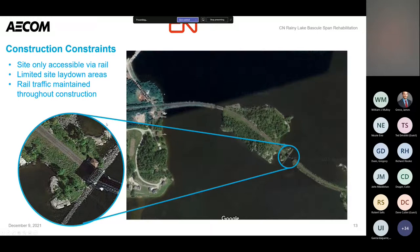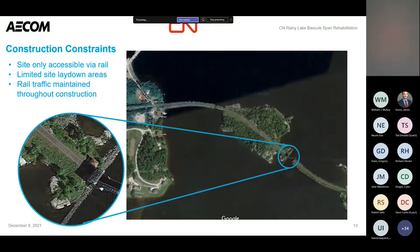Another constraint was limited lay-down areas. There is some green area adjacent to the track, but there were some decent grades, so there weren't nice flat areas to lay things down. We had to work carefully to identify good areas for the contractor. The last key constraint was maintaining rail traffic throughout construction — during winter months the bridge could remain closed, but we couldn't be interfering with the rail envelope so trains could maintain traffic throughout the project.